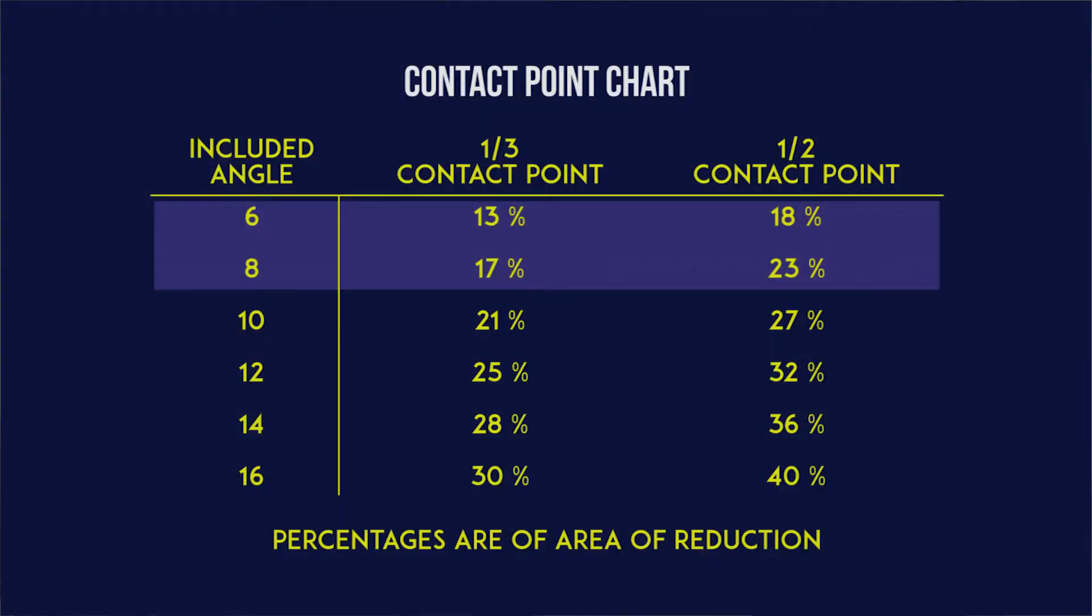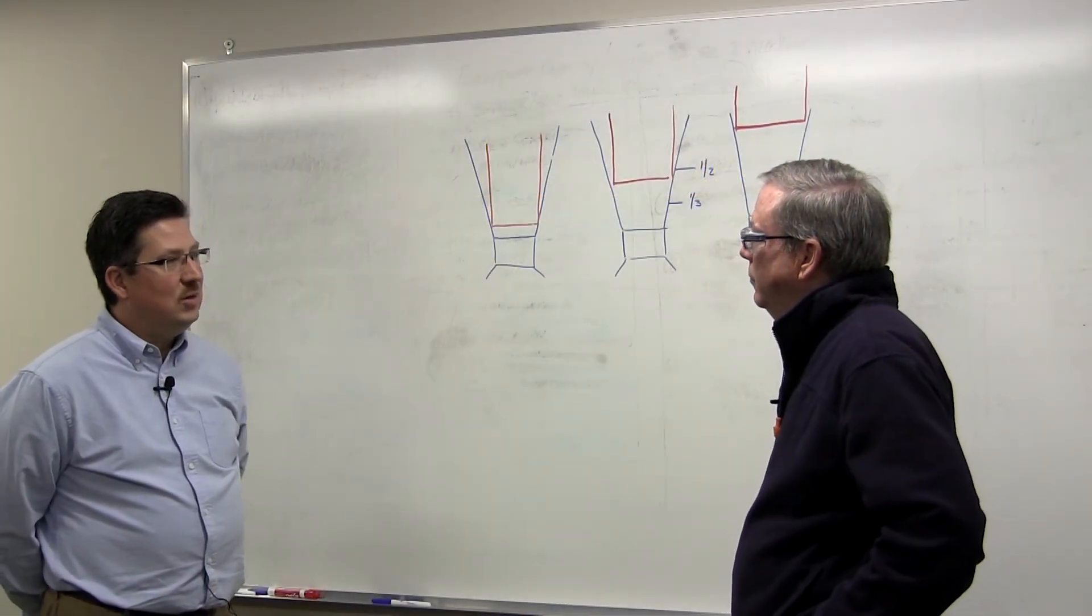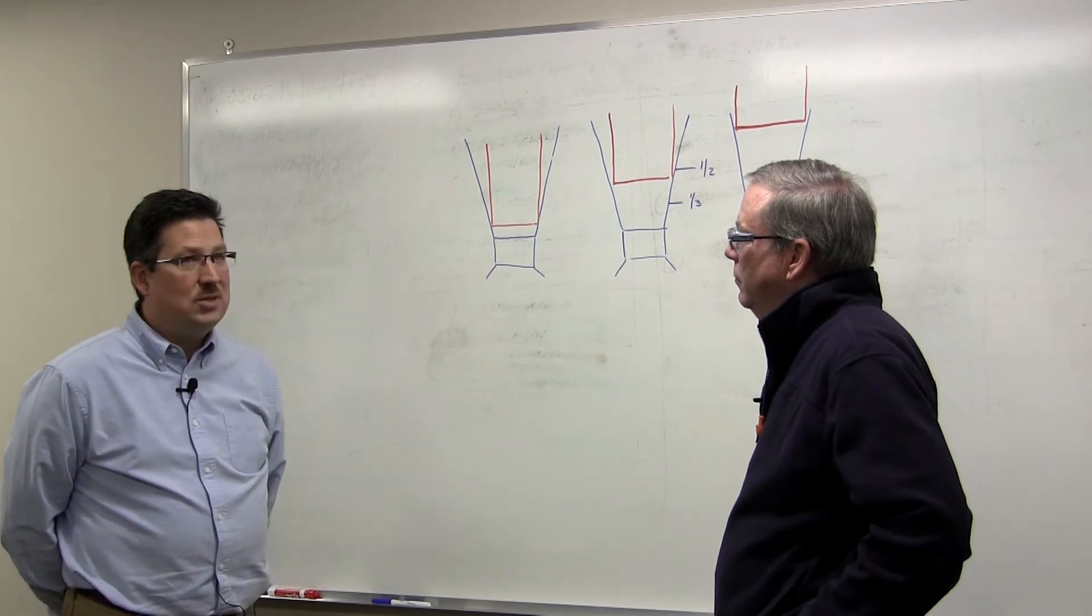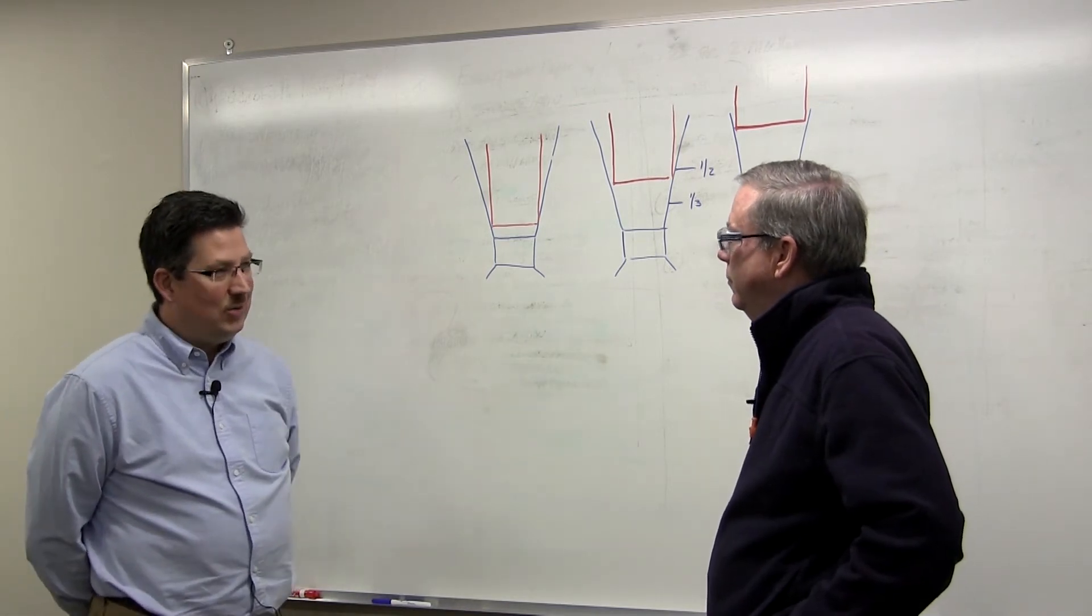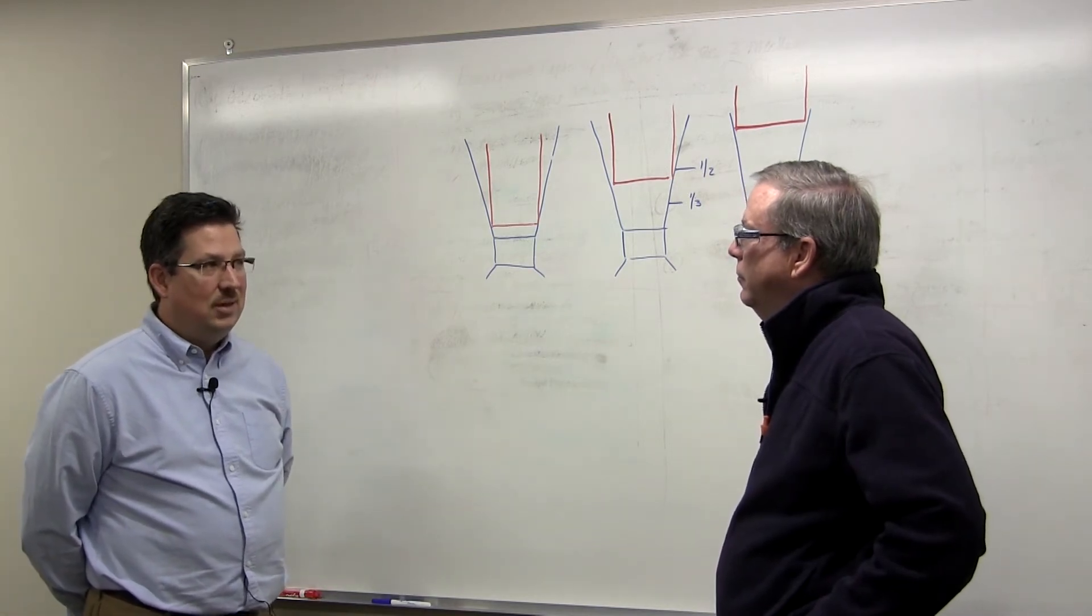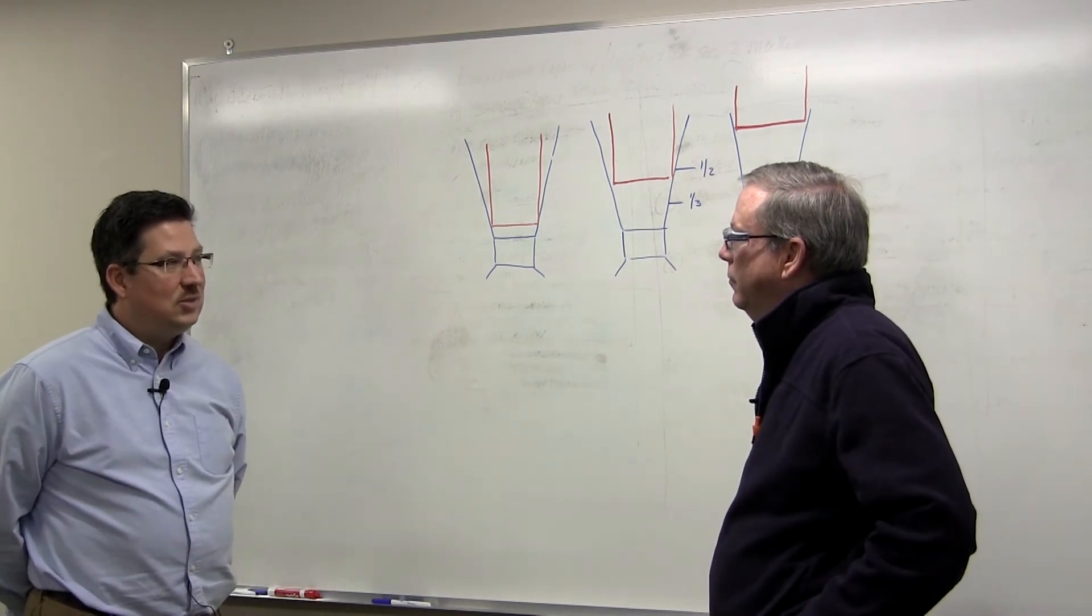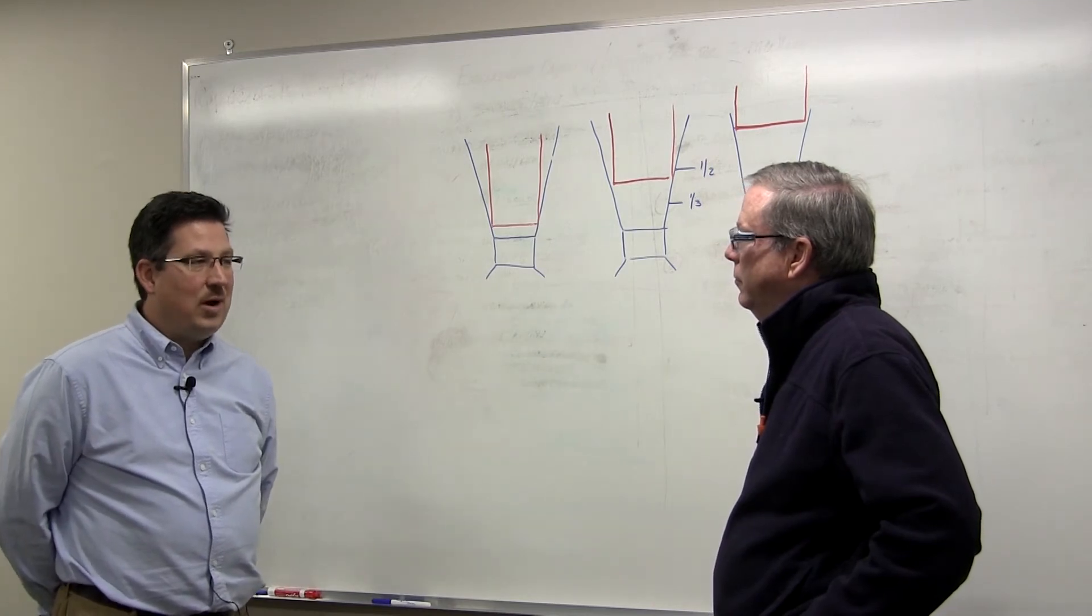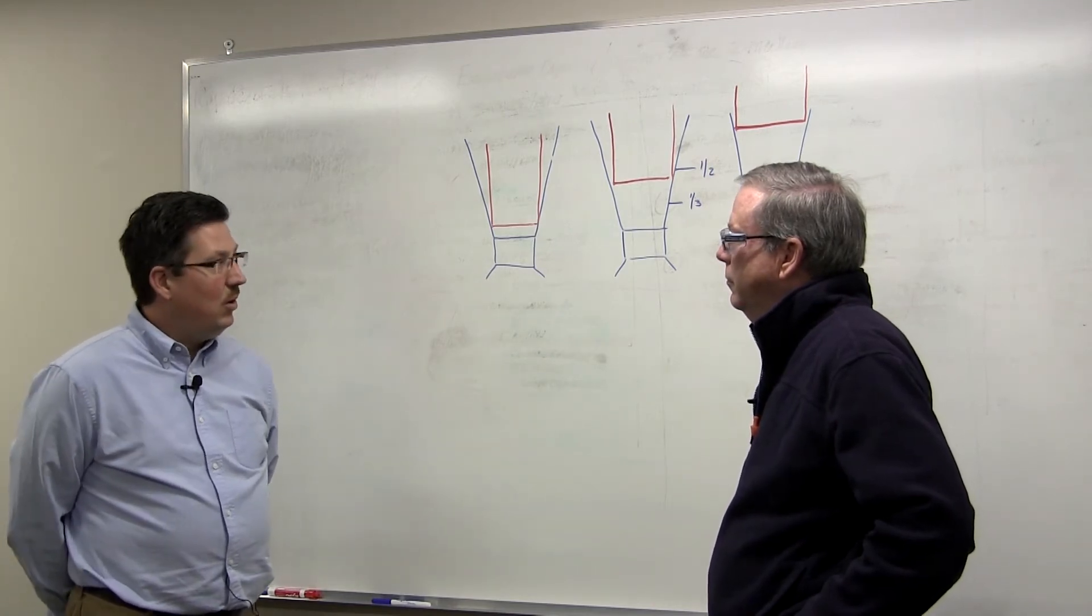So what we try to do is we use a chart that gives us a range that ties the area reduction to the contact point within the die and saying if you work within this band you are going to have good drawing success and good die life as long as the rest of the process is right. What we can do is take those six degree die angles and see what range of area reduction we can use and hopefully limit ourselves to maybe two die angles instead of having to go as many as three, making the logistics problem a little easier but also getting a higher rate of success on die life and product quality.